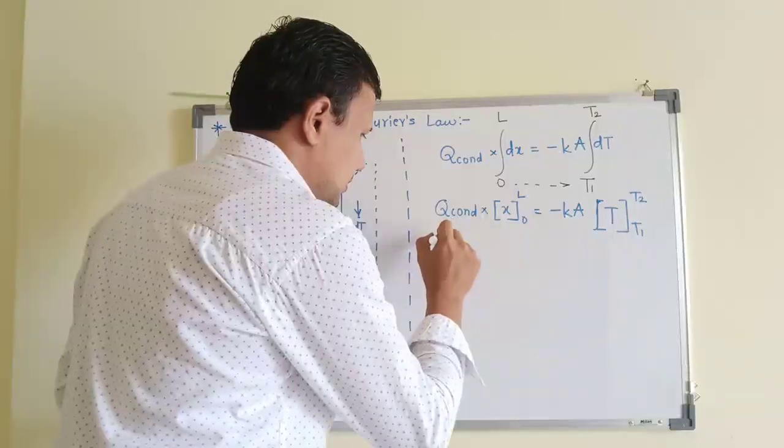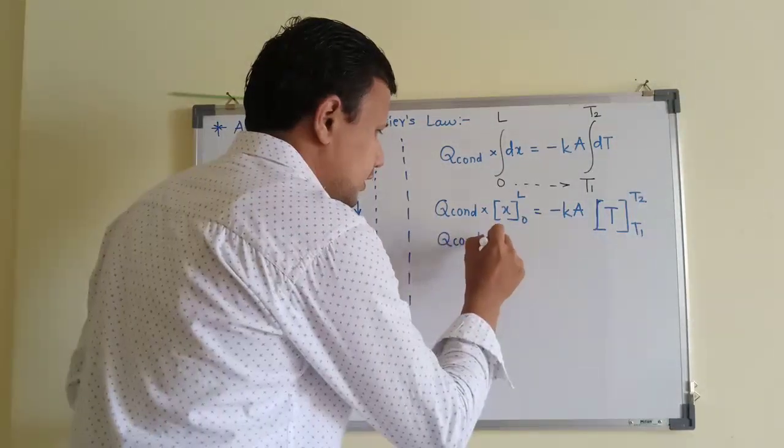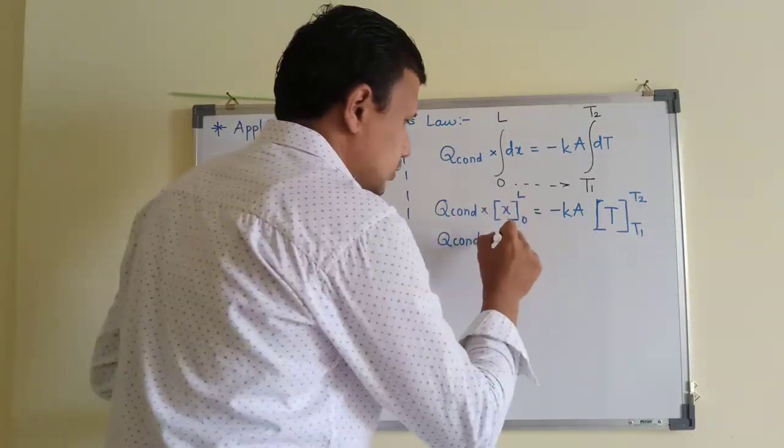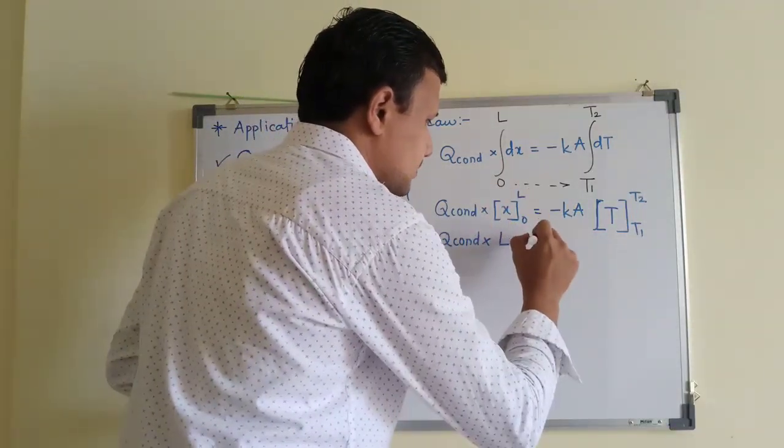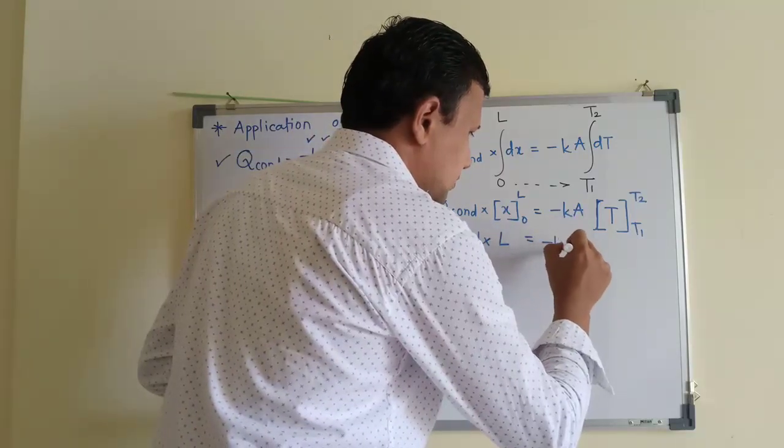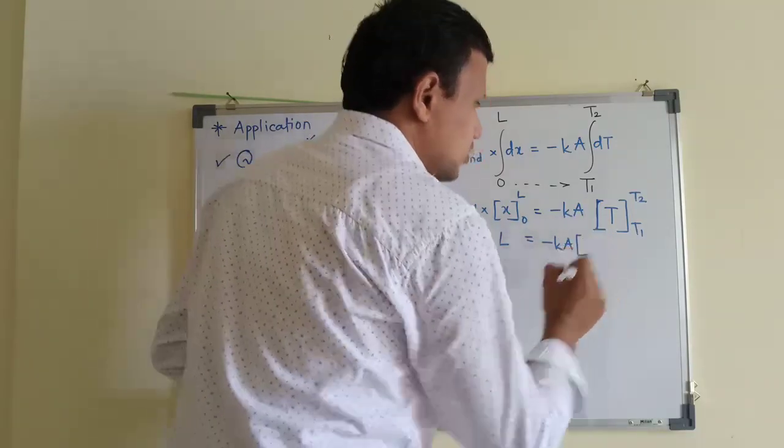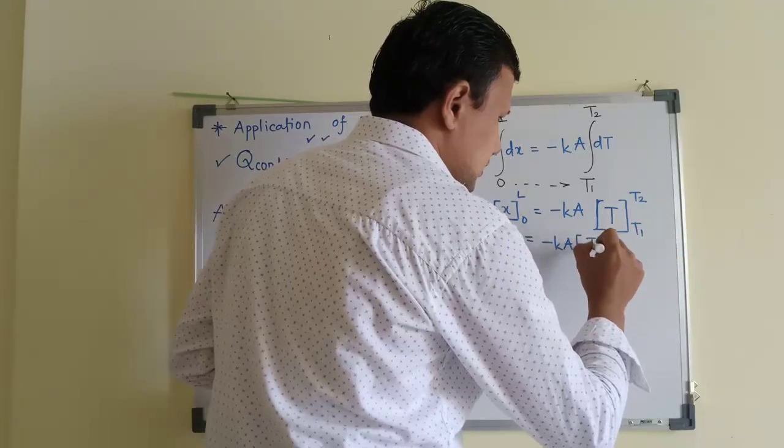Now we will substitute the limits of integration. So what we get here is L minus 0, so only L. And in this case we get minus KA into the bracket T2 minus T1.